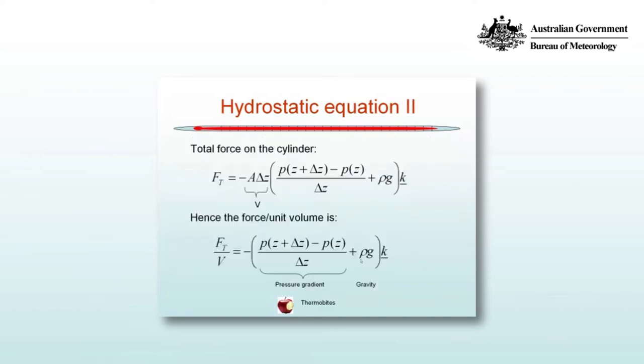To get the total force acting upon the cylinder we add these two terms together. We have the common factor of minus A delta z outside the brackets. Inside we have the pressure gradient which is pressure at the top minus pressure at the bottom divided by the height plus rho g. The second expression is simply dividing through by the volume of the cylinder which is A times delta z.